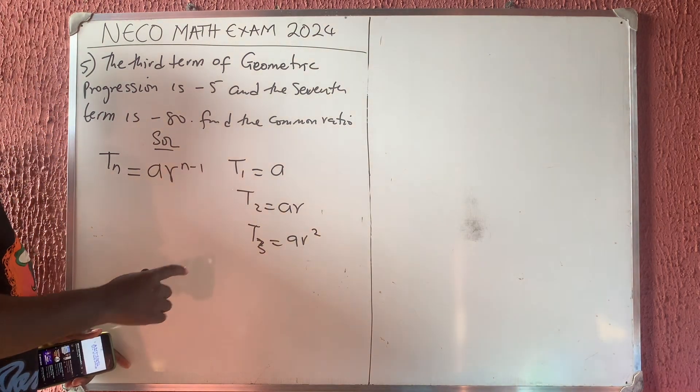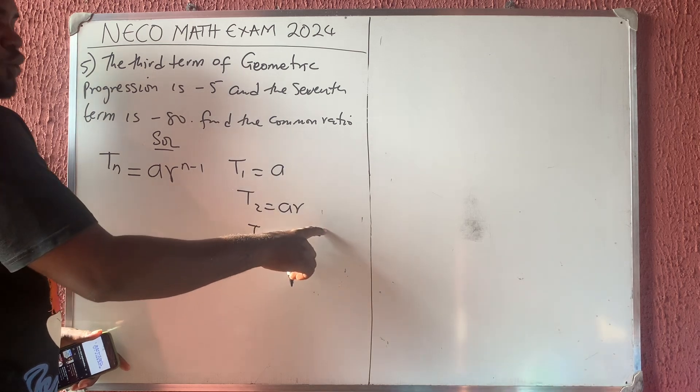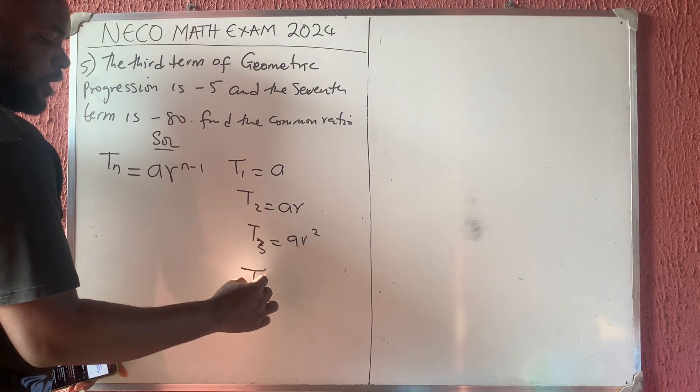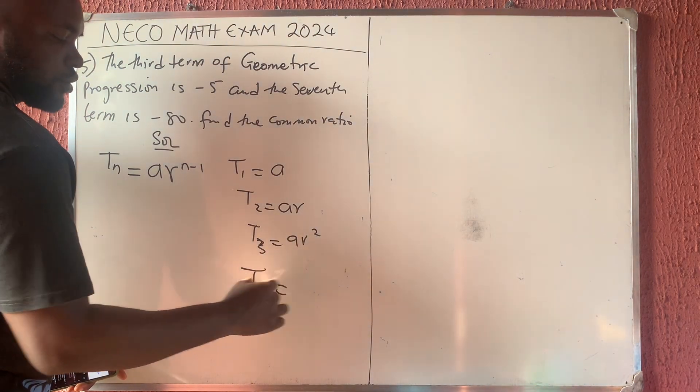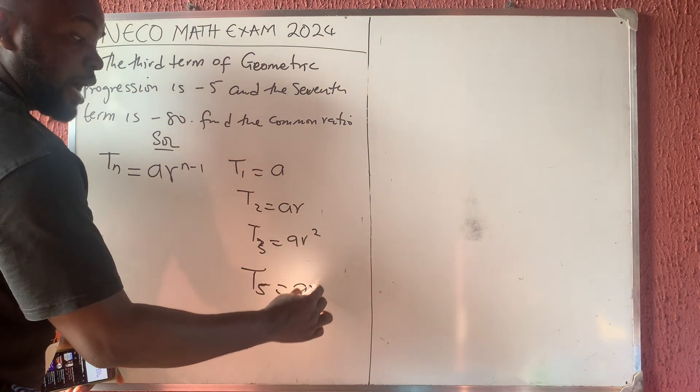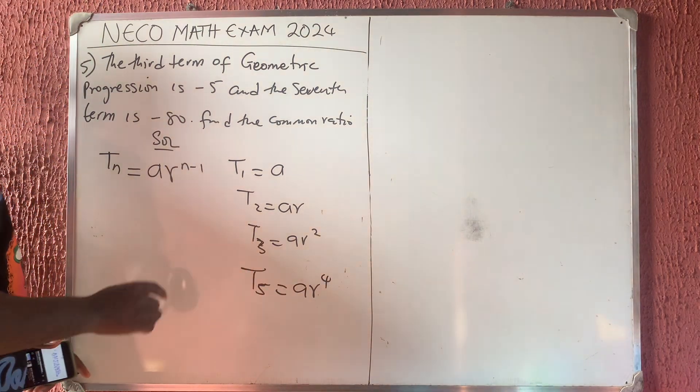There is a pattern I want to show you. That if here is 3, here will be 2. So what do you think T5 would be? A R to the power 4. That is the pattern.